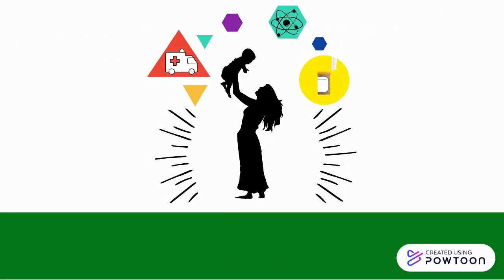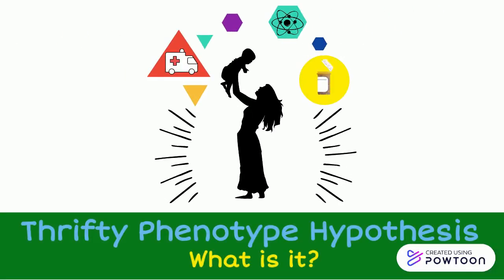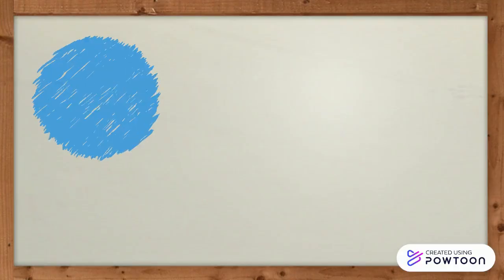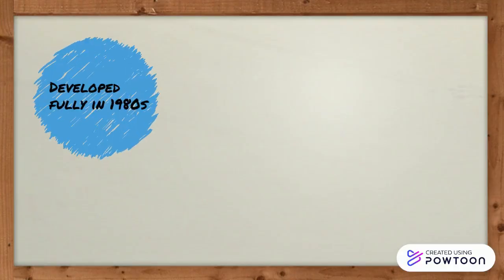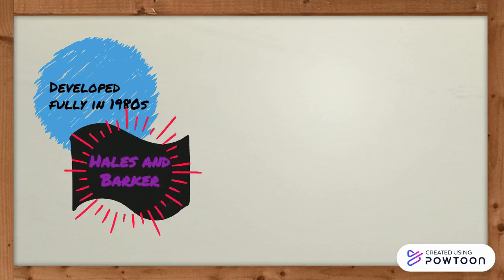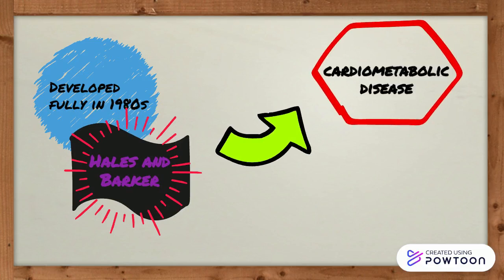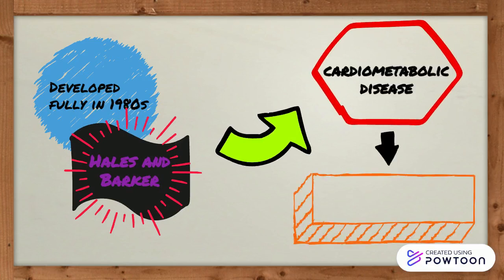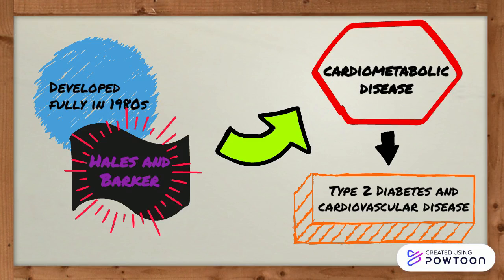Today's topic is the Thrifty Phenotype Hypothesis, but what exactly is it and what are some things that we can learn from it? The Thrifty Phenotype Hypothesis was developed by C.N. Hales and D.J. Barker in the 1980s as a basis for determining possible environmental factors that could influence the onset of cardiometabolic diseases, including type 2 diabetes and cardiovascular disease.